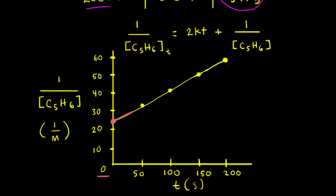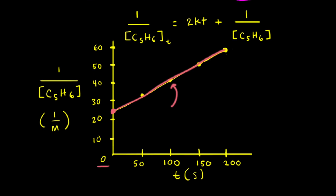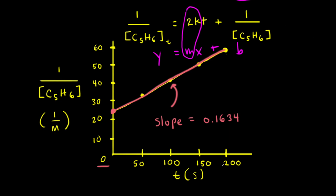Plotting the other points gives us a straight line. Next, we need to find the slope of this straight line, and there are many ways to do that. One way is to use a graphing calculator. When I used a graphing calculator to find the slope of this line, I found that the slope is equal to 0.1634. Thinking about Y equals MX plus B, our slope should equal 2K.